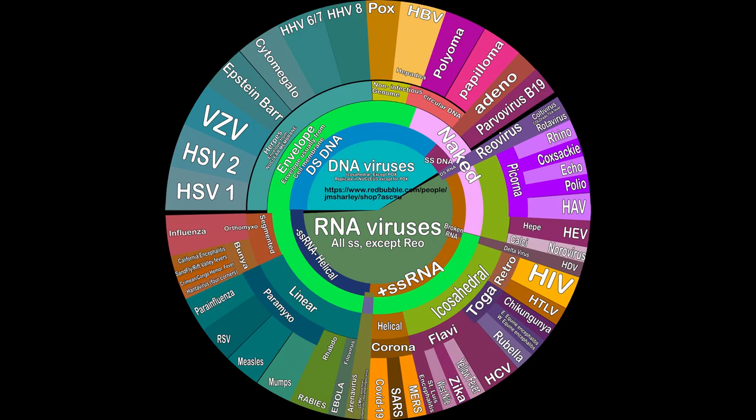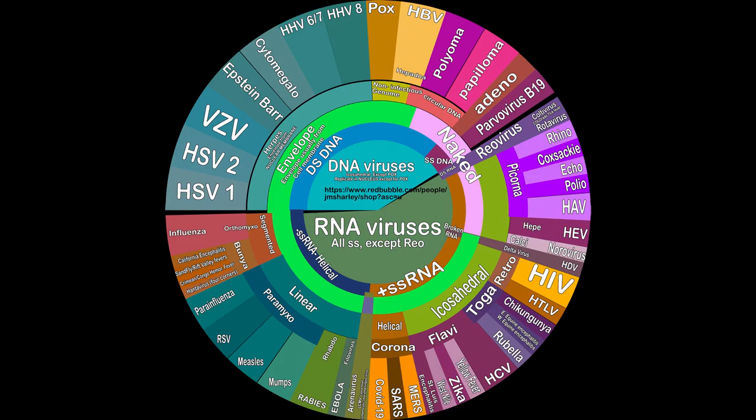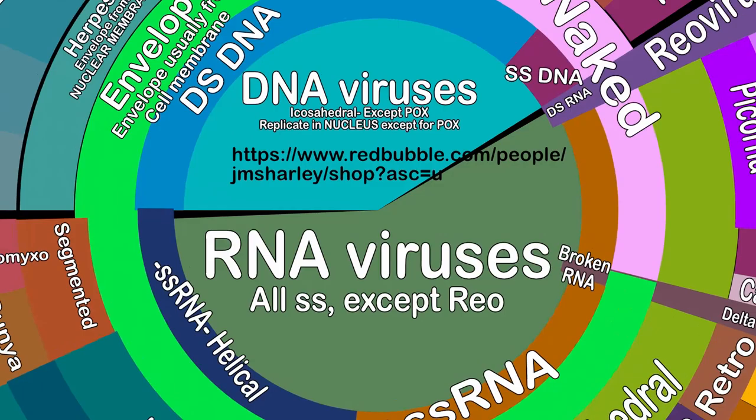Hello, here is a study guide I made for you visual learners. Here we have some of the major viruses split up by characteristics. Screenshot it, print it out, buy a sticker if you want, place it in your notes to draw around it — any way that helps you. Link in the description to my Redbubble where you can find this and a few other stickers for study aids.